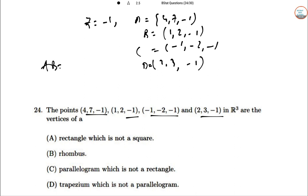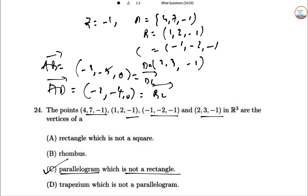We can find out AB = (-3, -5, 0) = DC. And AD = (-2, -4, 0) = BC. So vertices of AB and AD are not orthogonal and of different lengths. So parallelogram which is not a rectangle.